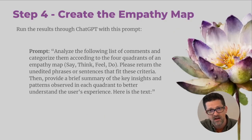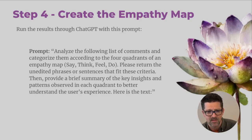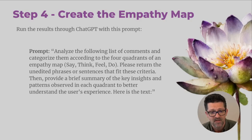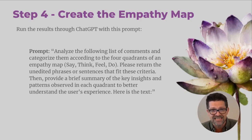So from there, you should have copied and pasted all of those relevant unedited phrases or sentences into a document. Now we're going to use that to create the empathy map. Step four: use this prompt — analyze the following list of comments and categorize them according to the four quadrants of an empathy map: say, think, feel, do. Please return the unedited phrases or sentences that fit this criteria. Then provide a brief summary of the key insights and patterns observed in each quadrant to better understand the user's experience. Here is the text — drop in everything you got from the clean data.